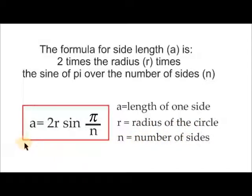The formula for side length A is 2 times the radius R, times the sine of pi over the number of sides N.